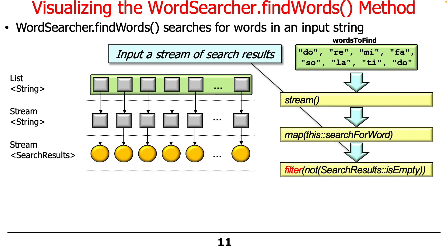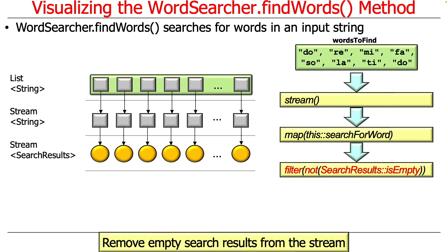Now we want to get rid of anything that was empty. If we looked for a word not in the do-re-mi lyrics, like 'foobar,' we'd end up with empty search results. In this case there are no empty results, but we need to prepare for that case. So we use the filter intermediate operation: if the search result is empty, we ignore it. We use the not negation — filter takes a predicate that only allows things through if it returns true. Since isEmpty returns true when empty, we negate it with not isEmpty, so we're filtering things that are not empty.